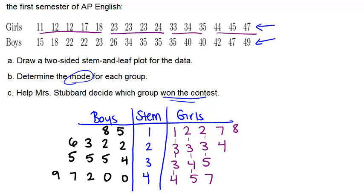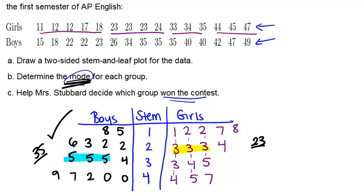That is our two-sided stem and leaf plot. Now we want to figure out the mode for each group by looking for the most frequent number on each side. For the girls, there are two 2s but then three 3s, so 23 is the mode for the girls. For the boys, there are two 2s but three 5s, representing 35. So the mode for the boys is 35. That means the boys win because they have the bigger mode.